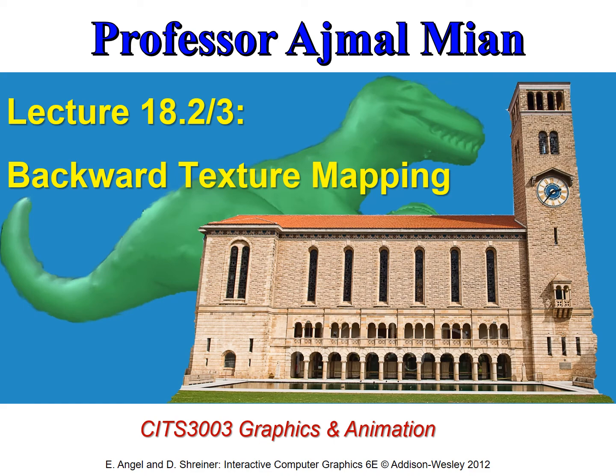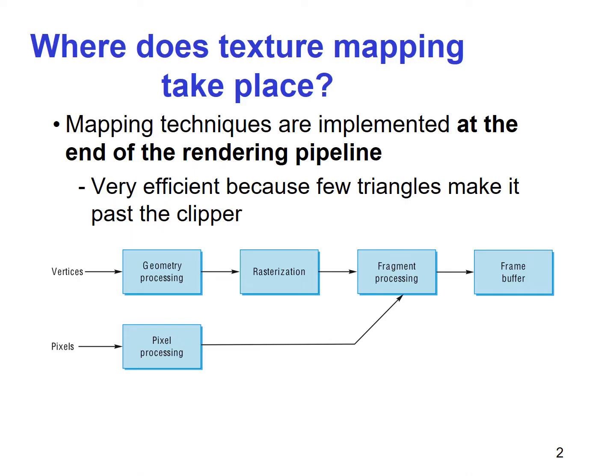In this lecture, we study a backward texture mapping technique to map the texture of two-dimensional images onto three-dimensional objects. Where does texture mapping happen in the pipeline? Mapping techniques are implemented at the end of the rendering pipeline. This is efficient because few triangles make it past the clipper, and everything that is clipped out we do not have to worry about mapping texture on them.